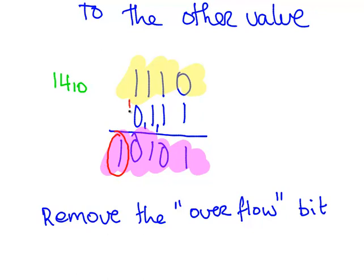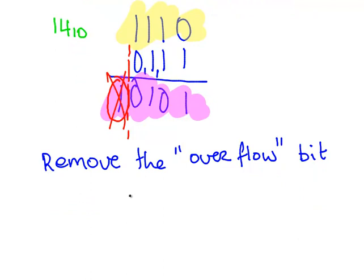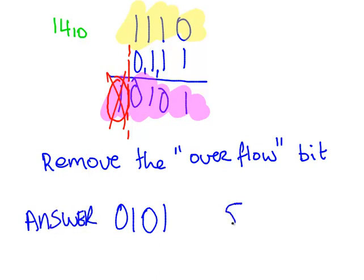So we're dealing with 4-bit numbers. Working from the right-hand side, just pick out the 4 bits that are relevant. We're going to remove the overflow bit and disregard it. And so our answer is 0, 1, 0, 1. You could probably spot that that works out as 5 in decimal, which is the answer we were expecting.